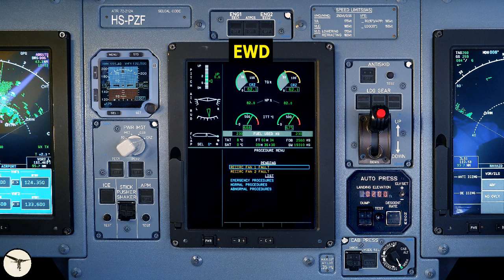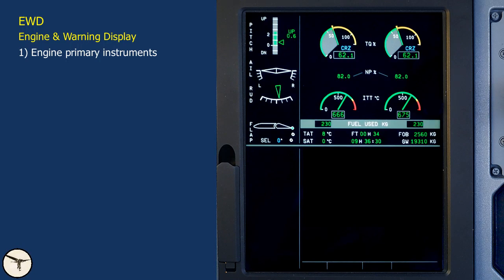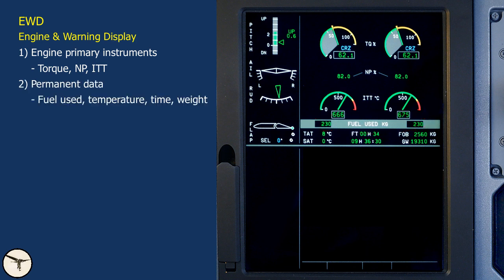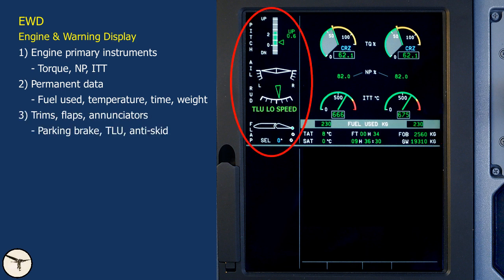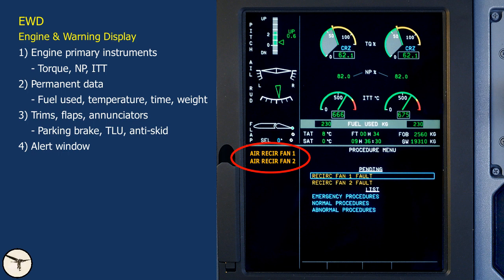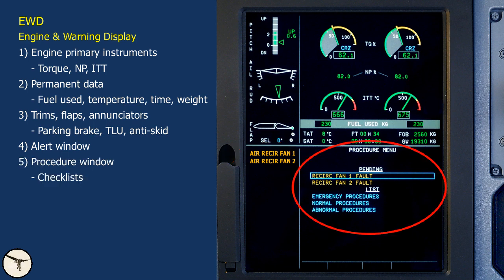The engine warning display is located on the central instrument panel and is divided into five windows: 1) primary engine instruments — torque, NP or propeller rotation speed, and ITT, the temperature inside the engine; 2) fuel used for each engine, TAT total air temperature, and SAT static air temperature; 3) flight time, which is automatically activated at takeoff, a clock, FOB fuel on board as calculated by the FMS, and gross weight as calculated by the FMS; 4) trim and flaps indicators plus annunciators for parking brake, TLU and anti-skid system; and 5) the alert window showing system failures, and the procedure window where checklists are displayed.